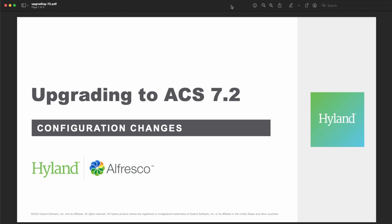Welcome to this video. Today we deal with the most important configuration change introduced with the release of ACS 7.2. Since the plain HTTP communication mode between Alfresco Repository and SOLR services is deprecated, you may need to adjust your configuration to use one of the supported communication modes: MutualTLS or Secret Header. Let's proceed with the details for these configuration modes, so you can identify the changes required for your deployment.